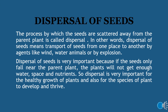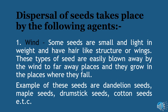Dispersal of seeds: the process by which seeds are scattered away from the parent plant is called dispersal. In other words, dispersal of seeds means transport of seeds from one place to another by agents like wind, water, animals, or by explosion. Dispersal of seeds is very important because if the seeds only fall near the parent plant, the plants will not get enough water, space, and nutrients. Dispersal is very important for the healthy growth of plants and for the species of plants to develop and thrive.